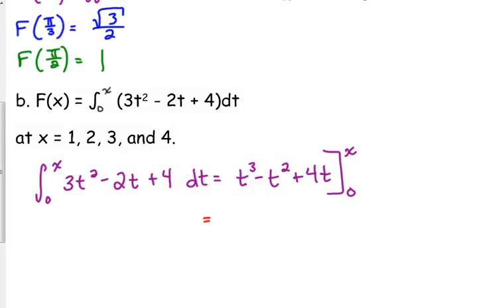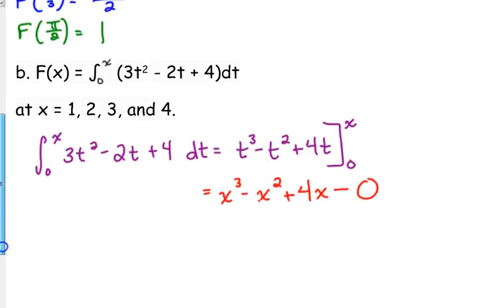And if we plug in our upper limit for T, we get X cubed minus X squared plus four X. What do we get when we plug in zero? Zero. I'm going to put minus zero here just for the sake of having it there.